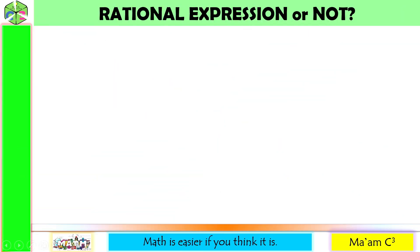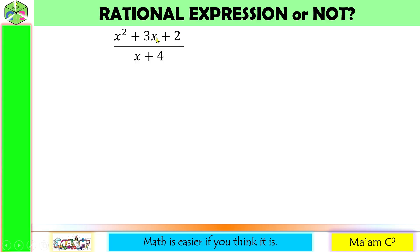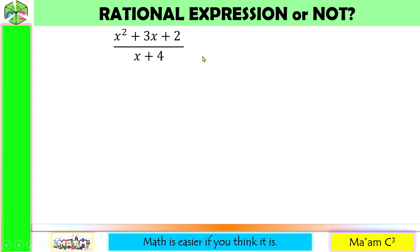Let's have another activity: rational expression or not. First one — let us examine the numerator and the denominator. Is the numerator a polynomial? The exponents are all positive integers and this is a constant. Yes, this is a polynomial. So a polynomial divided by another polynomial is a rational expression.